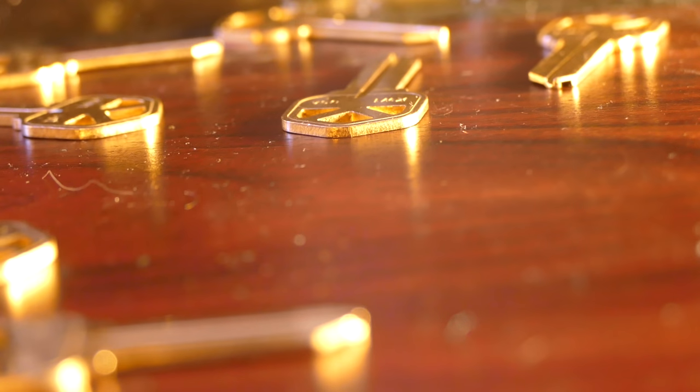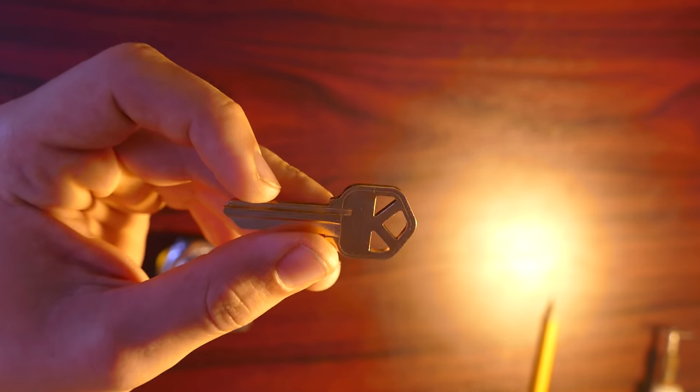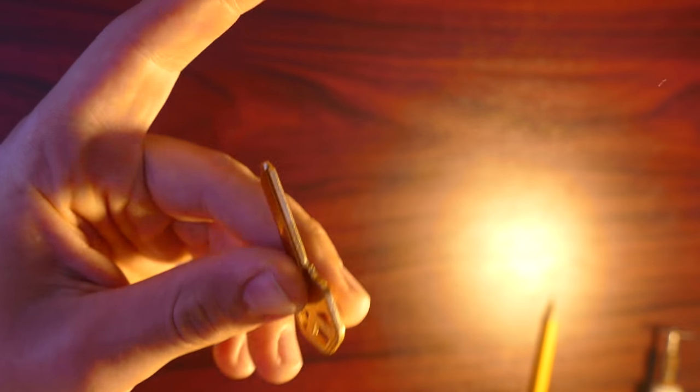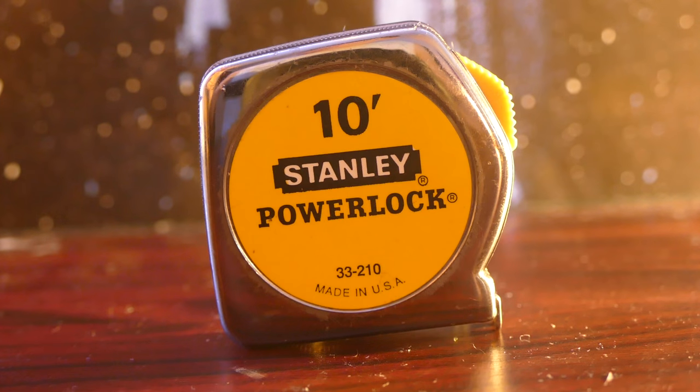All right, so the first thing we're going to be doing with this key is adding a ruler to one side. So what you're going to need for that is a tape measure or a ruler.